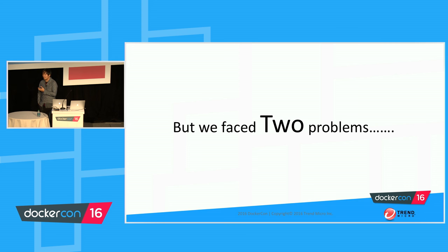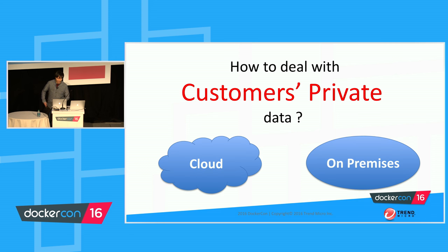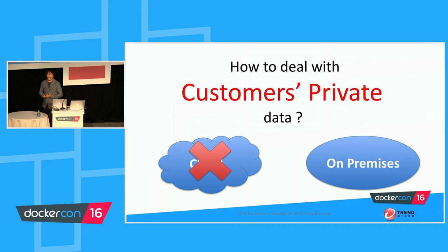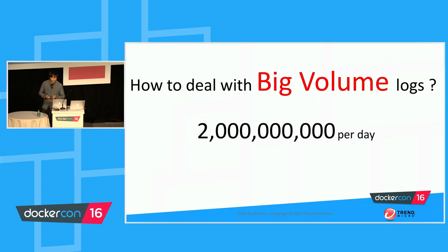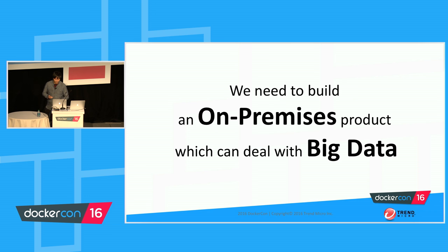When building this system, we faced two problems. The first problem is how to deal with customers' private data. If we build this system on the cloud, we need to send customers' logs to the cloud as well. Customers may have concerns because there is too much personally identifiable information in the logs. So we decided to build this as an on-premises solution. The next problem is how to deal with a big volume of logs — for example, one of our customers generates 2 billion logs per day. So our system needs to be capable of handling that volume. In summary, we need to build an on-premises product that can handle big data.